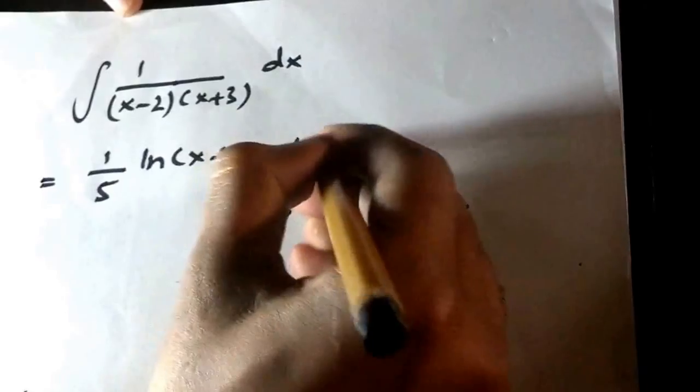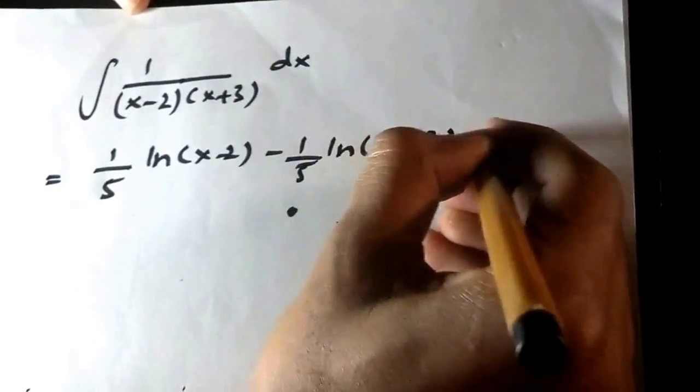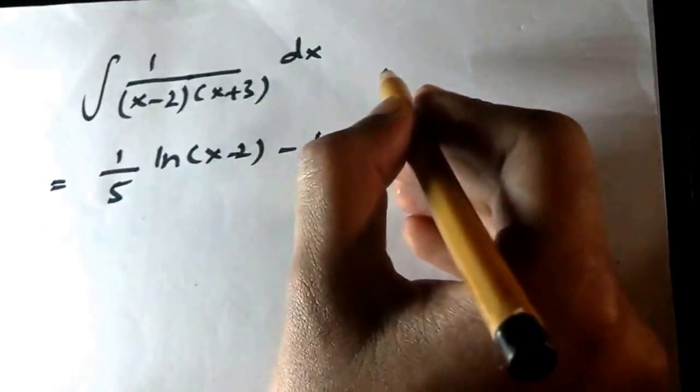Minus 1 by 5 and then x plus 3 plus c. So how do I do it?